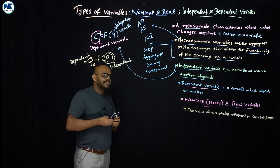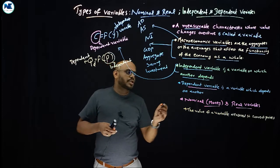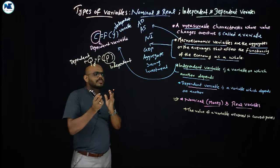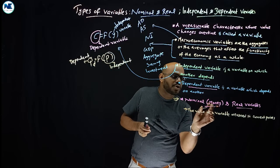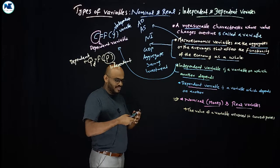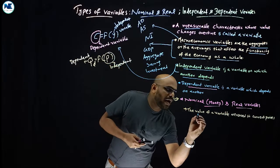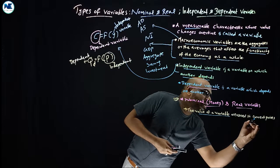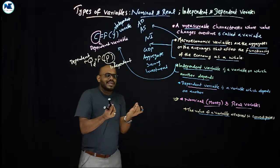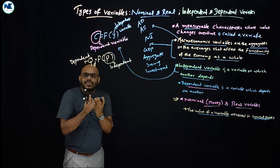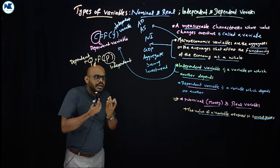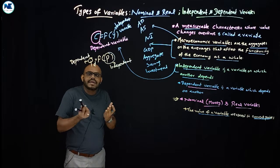Now we are going to discuss nominal and real variables. A nominal variable is also known as a money variable. A nominal variable is one where the value of the variable is measured in current prices — that is the key word: current prices. For example, national income measured at current prices is a nominal variable.